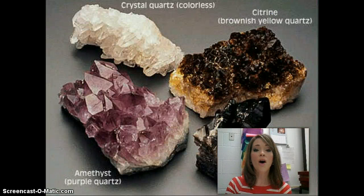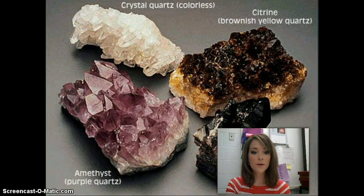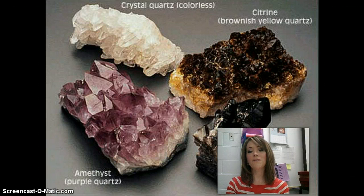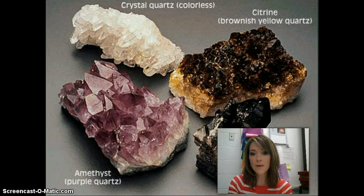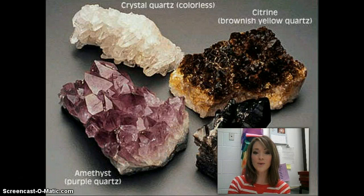There are a few minerals that come in a characteristic color — their color is very distinctive, always the same, and doesn't vary a lot. For those, color can be helpful. One example is sulfur, which is a bright yellow color and also has a rotten egg smell — another way to identify it. But most minerals aren't that easy to identify by color. For example, quartz comes in colorless, brownish, purple, and smoky gray-to-black varieties. Many other minerals are also colorless, like halite and calcite, so don't use color alone.